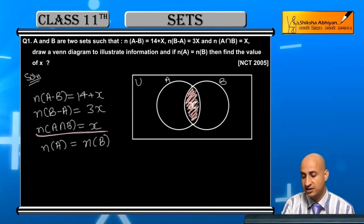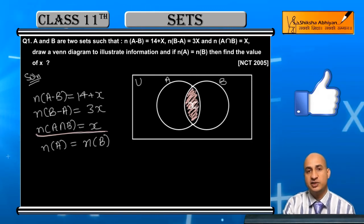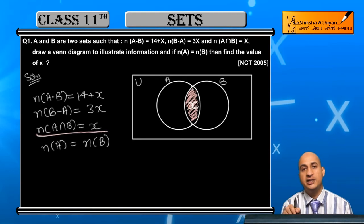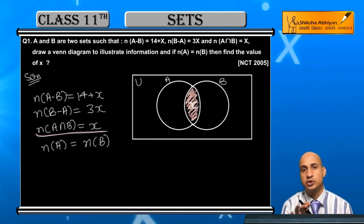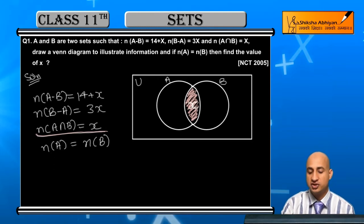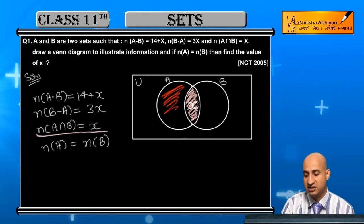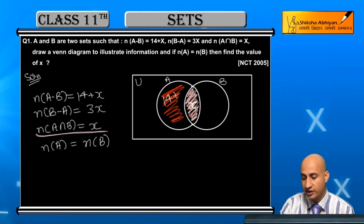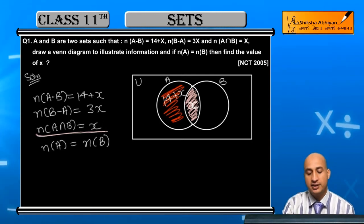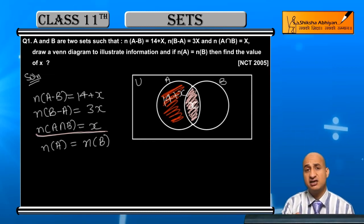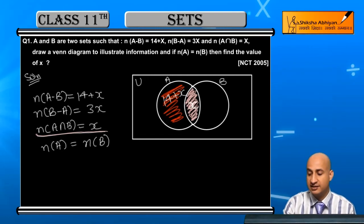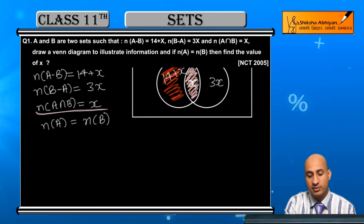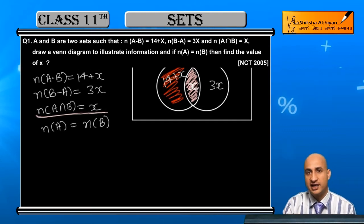Now A minus B represents what? A but not B - the portion in set A where B is not common. This section is which one? This is the left section. Here it will be 14+x. Next is B minus A - B minus A represents the section in B that is not common with A. This section is 3x. Now the Venn diagram is represented.